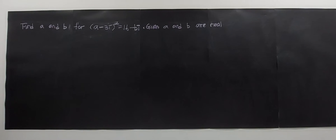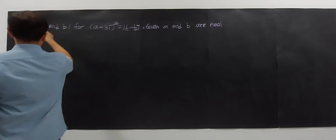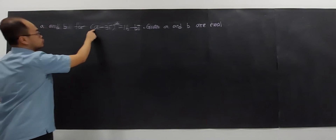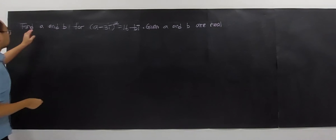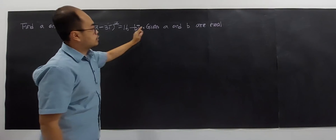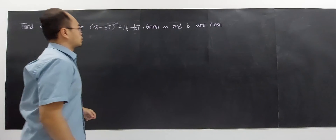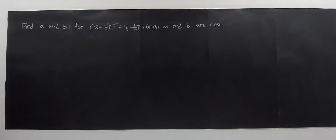Hi, let's solve this question. Before that, you have to try to solve it before you look at my solution. So find the values of A and B, given that A and B are real. Real means that they are real numbers, not imaginary numbers. So how to solve this?